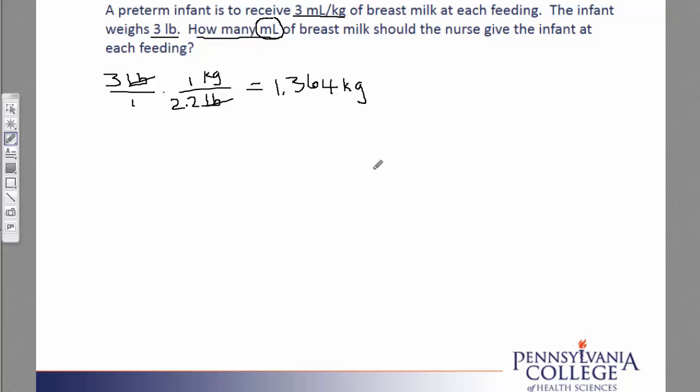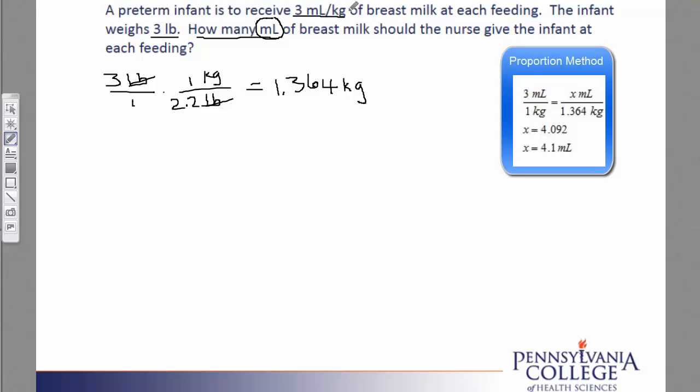Our second step in the problem is to take the recommended amount and multiply that by kilograms to cancel the label of kilograms. So we have 3 milliliters per kilogram, and we'll multiply that by 1.364 kilograms. Our label of kilograms will cancel.